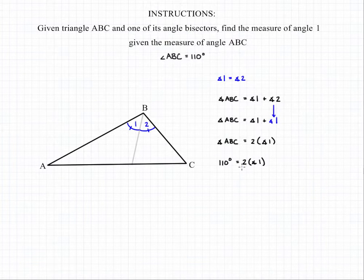We can divide both sides of that equation by 2, and that will give us our final answer which is 55 degrees is equal to the measure of angle 1.